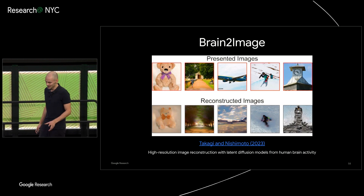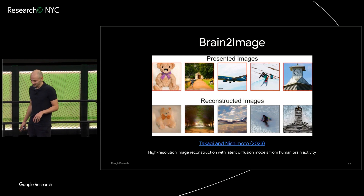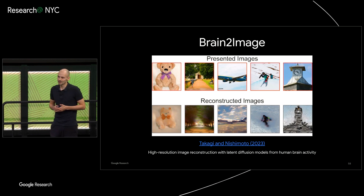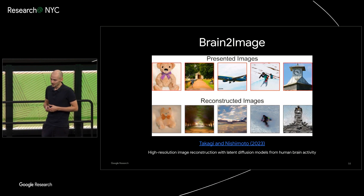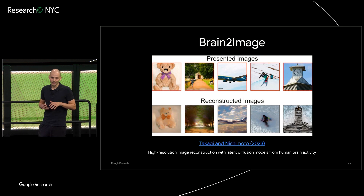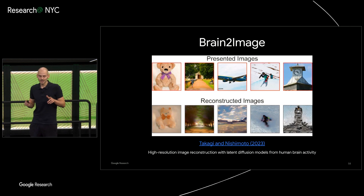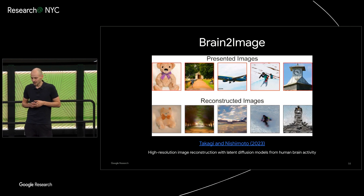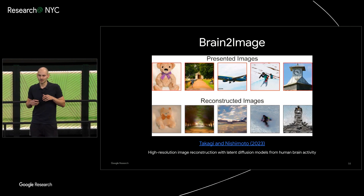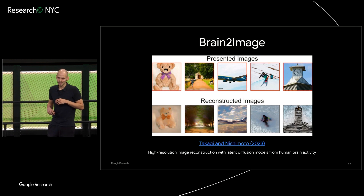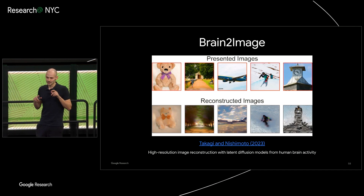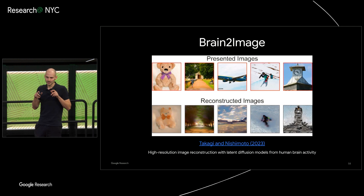Yu Takagi and Shinji Nishimoto, these are two professors who wrote this paper. They presented people in an MRI machine with images — so you're just in there, and instead of scanning your knee, the thing is scanning your brain activity, doing this while you look at images presented at the top.